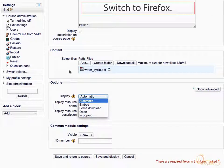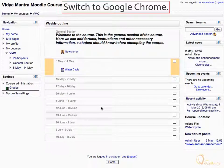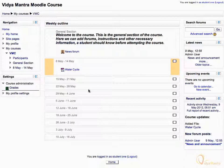Now switch to Firefox and change the display option for the file to force download and save it. Again switch to Google Chrome and click on water cycle file.